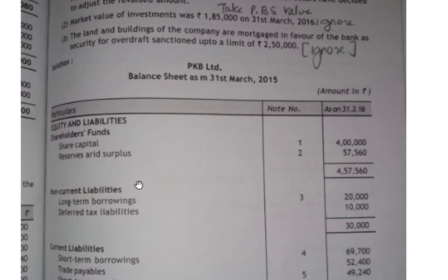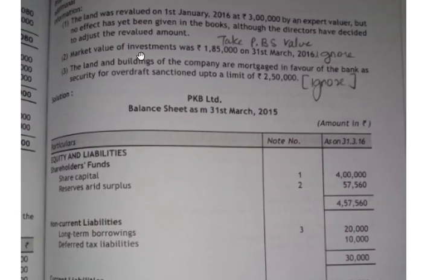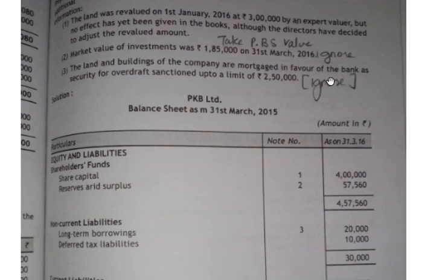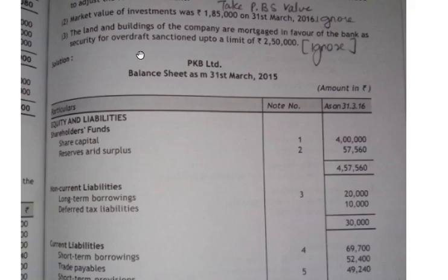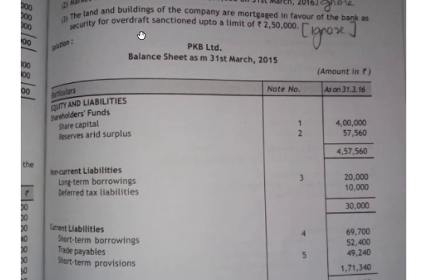The market value of investment was one lakh eighty-five thousand as on 31st March 2016 — just ignore this point since they have not told whether it needs to be reported. The investment book value of one lakh eighty thousand is what we consider. The land and buildings of the company are mortgaged in favor of the bank as security for a bank overdraft sanctioned up to a limit of two lakh fifty thousand. We can separately show the value of land and building as per the balance sheet. Now let's start with the working notes.